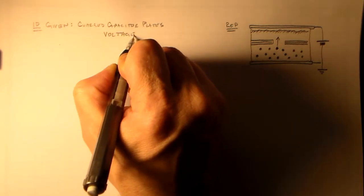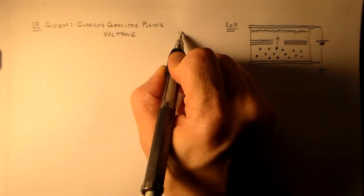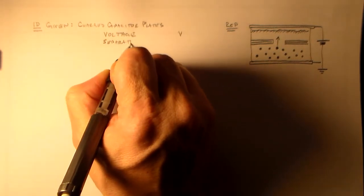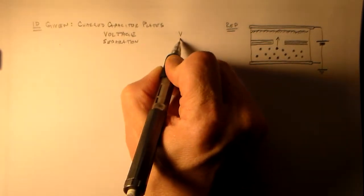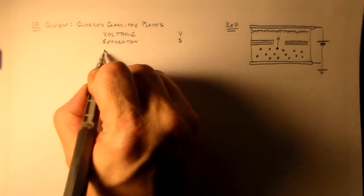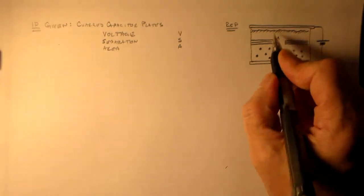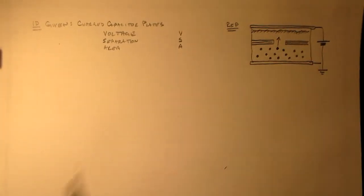We're given some charged capacitor plates with some voltage, V, put across them, with separation S and area A. So this is S and the square of this thing is A.